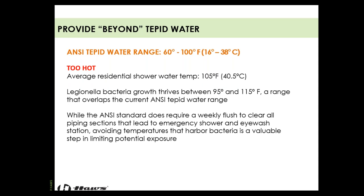One thing to note on the too-hot side: Legionella bacteria grows and thrives between 95°F and 115°F. Note that 95°F is within our ANSI tepid water range — this will likely change in the standard eventually. Legionella can make a bad situation even worse after the victim reaches the hospital. Our average residential shower is about 105°F, so 85°F isn't going to be awful. The victim will be more concerned about the contamination. At 85°F — the sweet spot for tepid water — you stay within the mid-range and remain compliant.